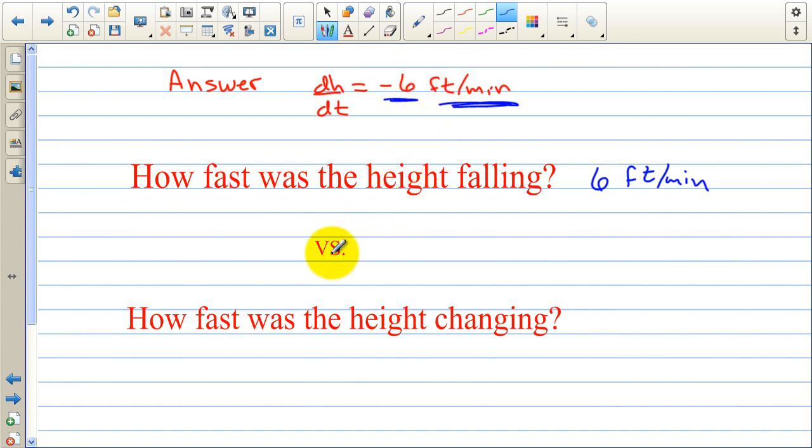They might ask it a little different way. They might say, how fast was the height changing? If they ask for how it's changing, it's not assumed that this is falling now. It could be either. So when you answer, and when you write the answer negative 6 feet per minute, now it's assumed that this height is changing in the negative direction. So the object would be falling. So the answer could be negative 6, but you could have to answer it with a positive answer or a negative answer depending on how the question is asked.